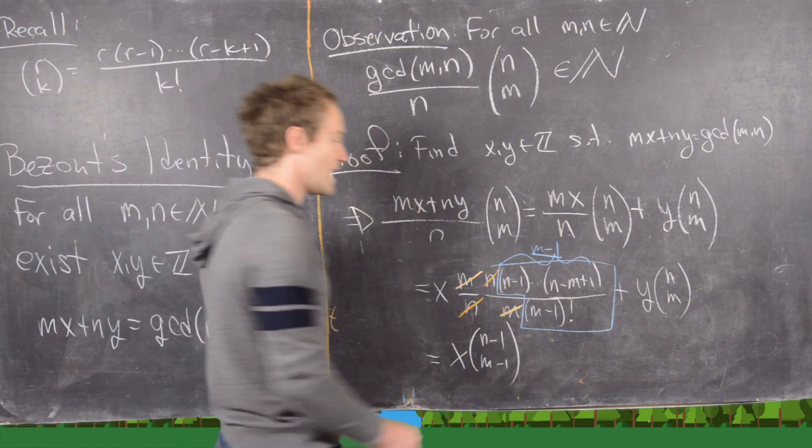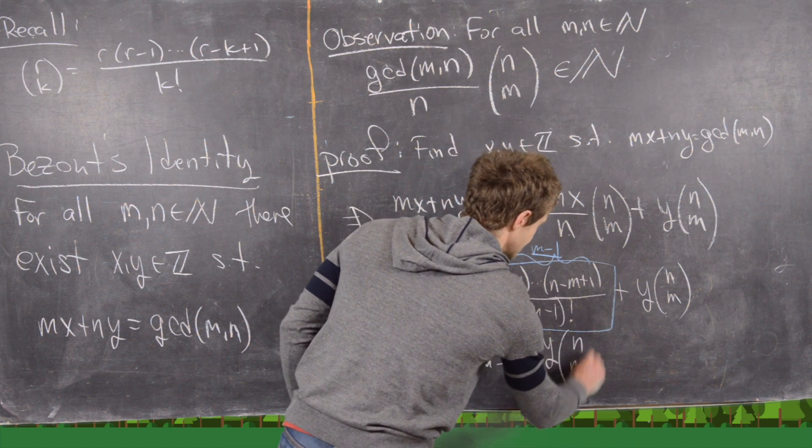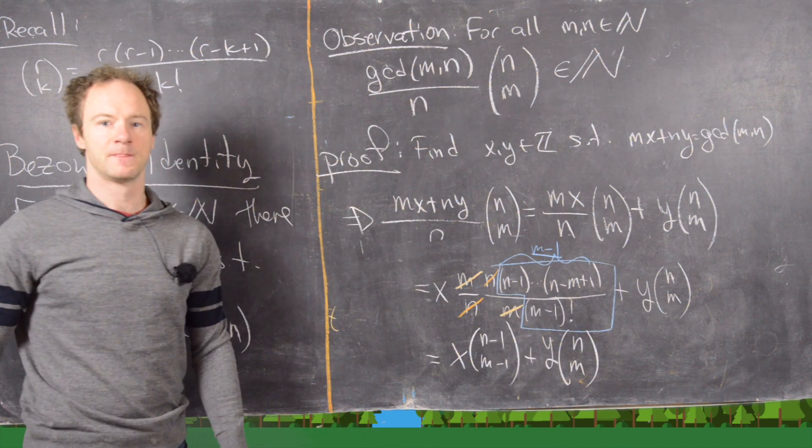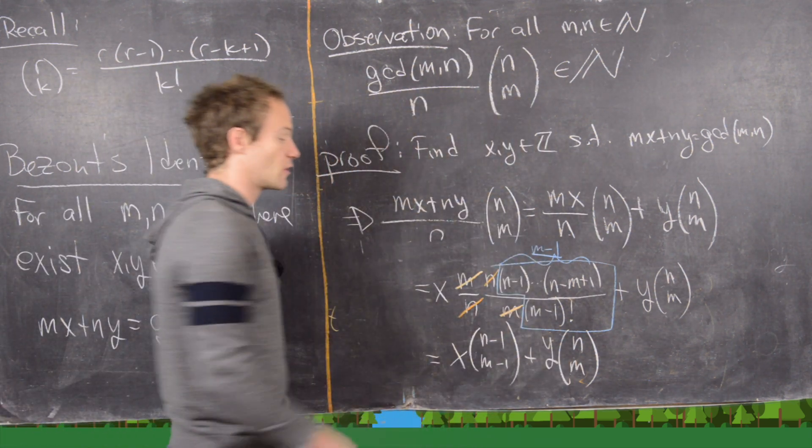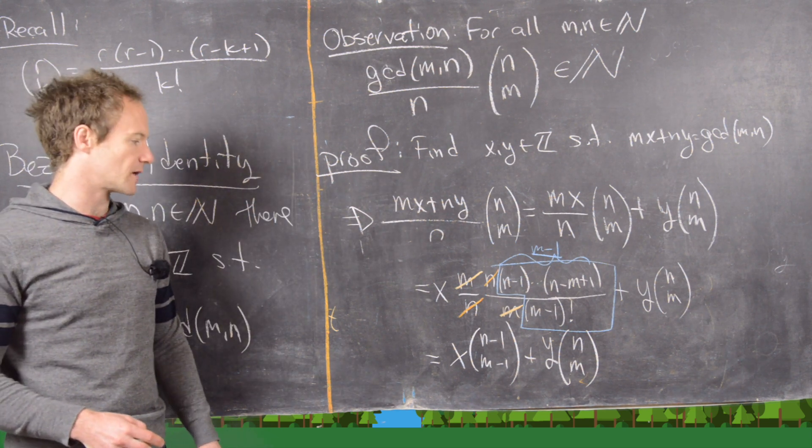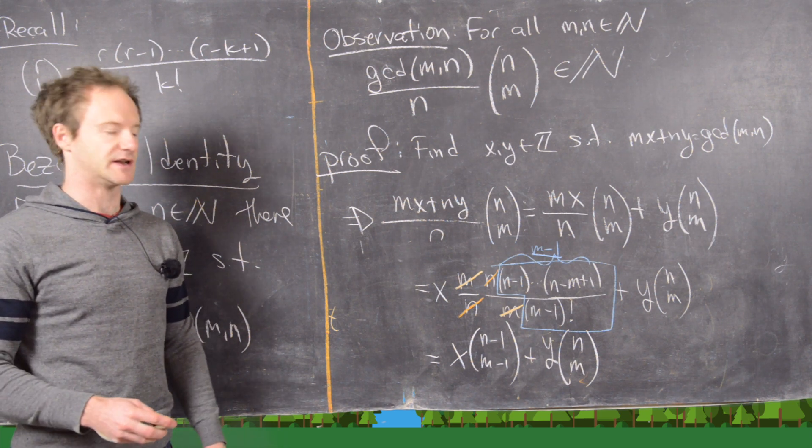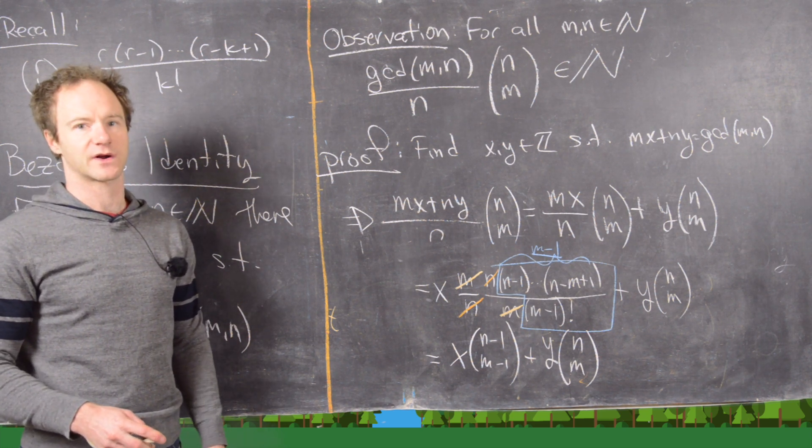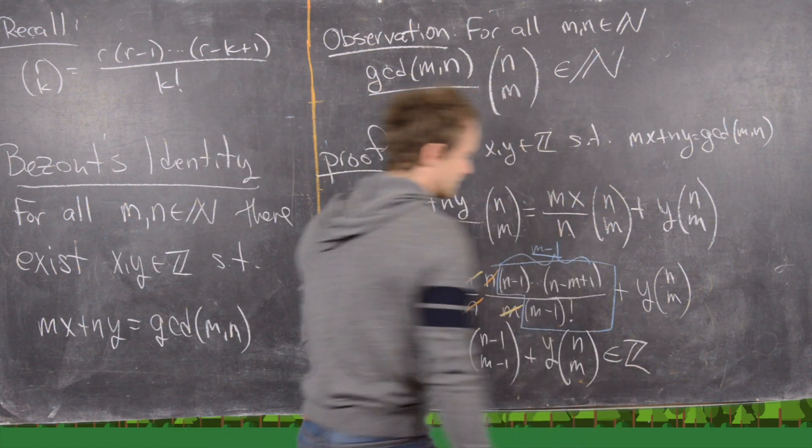Great. And then just bringing this thing down, we have this is y times n choose m. But notice those are both integers because binomial coefficients are always integers. Well, if you plug natural numbers into them, they are. And then x and y are integers given by Bezou's theorem or by the extended Euclidean algorithm if you're working out examples, which makes this whole thing an integer.